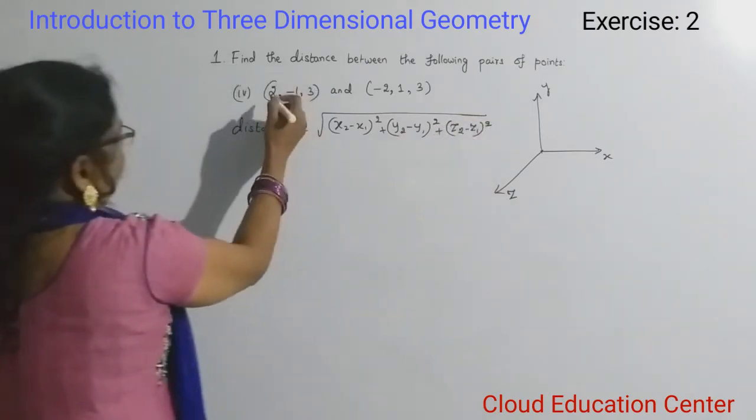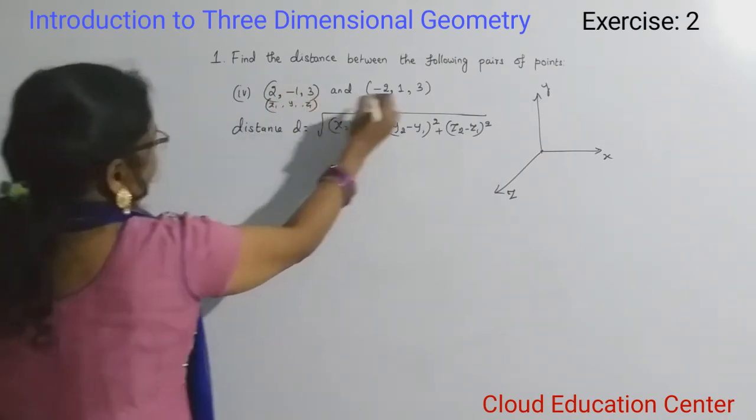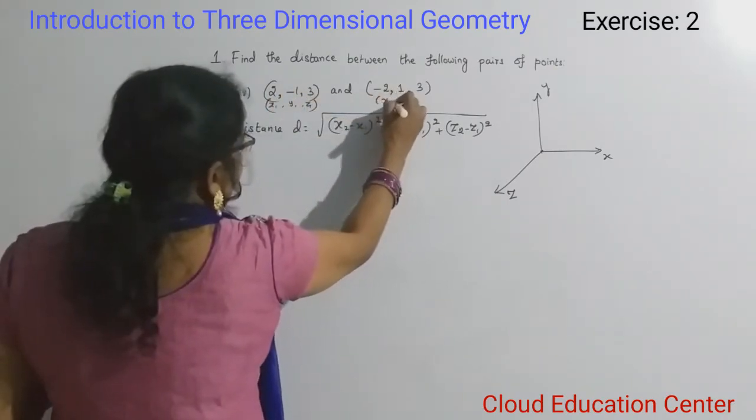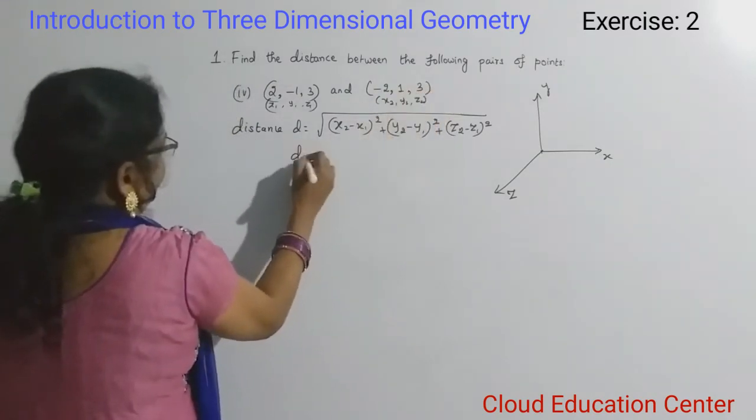So these points, we will mark as x1, y1, z1 and x2, y2, z2. We will substitute the values now.